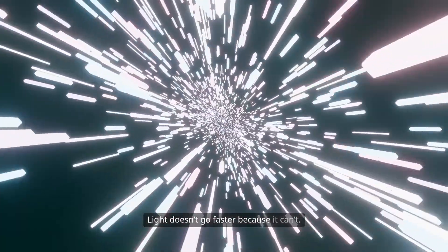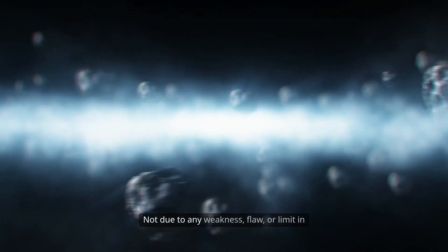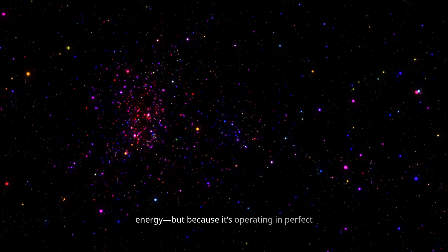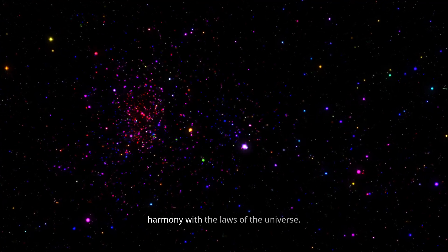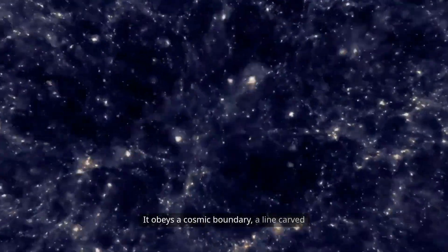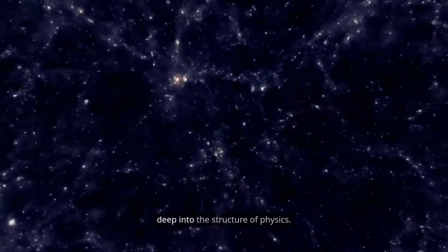Light doesn't go faster because it can't. Not due to any weakness, flaw, or limit in energy, but because it's operating in perfect harmony with the laws of the universe. It obeys a cosmic boundary, a line carved deep into the structure of physics. One that says, this far, no farther.